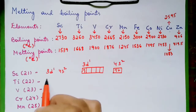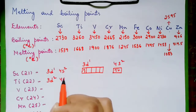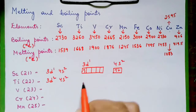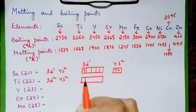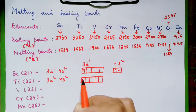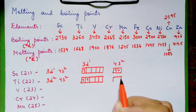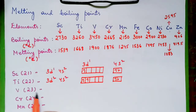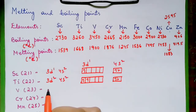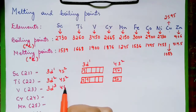For titanium, the valence shell electronic configuration is 3D2, 4S2, which means there are 2 unpaired electrons. For vanadium, the configuration is 3D3, 4S2.